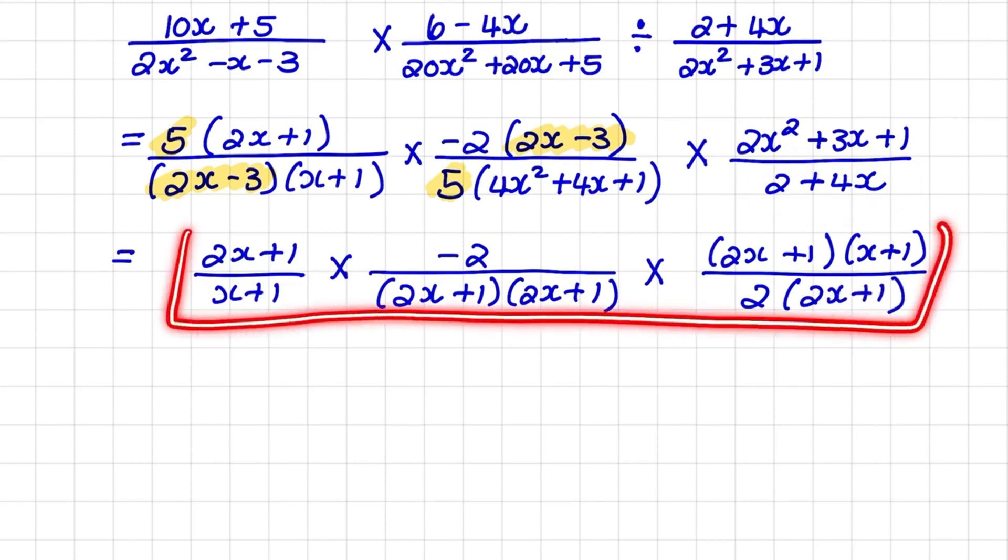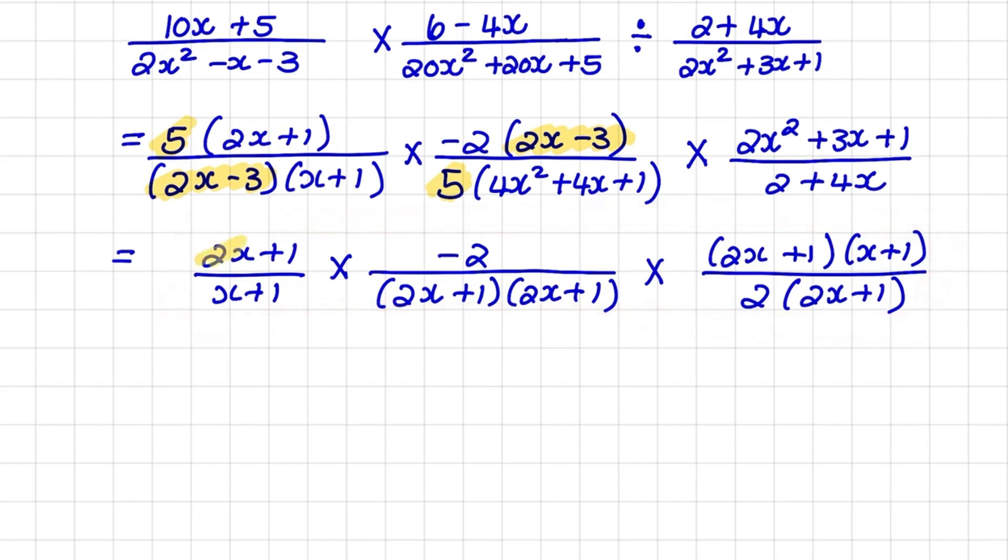So before I move on, I would inspect the three fractions together again. And I notice that 2x plus 1 can cancel out 2x plus 1 in the denominator, and 2x plus 1 next to it can also cancel out 2x plus 1 in the third fraction. Also, x plus 1 in the third fraction will cancel out x plus 1 in the first fraction.